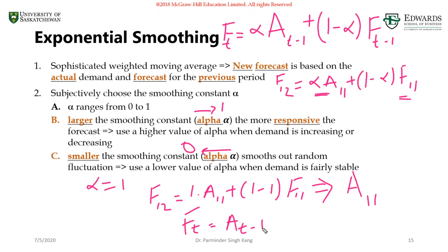Similarly, if you put the value of alpha as 0, you will end up with F12 = F11, so the forecast for the next period is the same as the forecast for the previous period. That's why you get a smooth constant line with alpha equal to 0. With alpha equal to 1, you will be mimicking exactly what's happening in real life, and the time series will be more erratic.